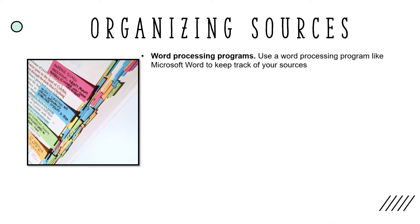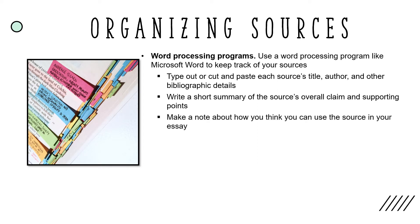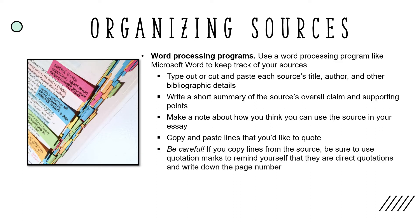You can also use a word processing program like Microsoft Word to keep track of your sources. For this option, you can type out or cut and paste each source's title, author, and other bibliographic details, write a short summary of the source's overall claim and supporting points, and make a note about how you think you can use the source in your essay, or copy and paste lines that you'd like to quote. Be careful though — if you copy any lines from the source, be sure to put quotation marks around them to remind yourself that they are direct quotations and not your own notes, and write down the page number.